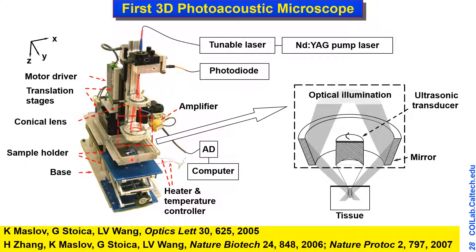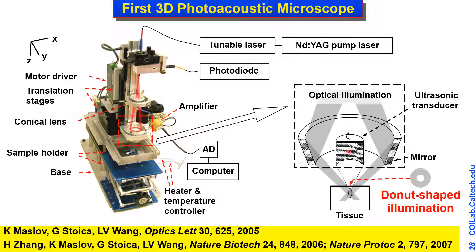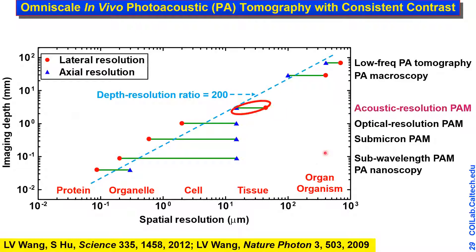The first 3D photoacoustic microscope was built in our lab. The key component uses a donut beam focused into tissue with a dark core on the tissue surface to minimize surface interference. Ultrasound detection is confocal with light illumination to maximize SNR. With a single laser shot we get a 1D image; time of arrival gives depth resolution, and acoustic focusing gives lateral resolution for full 3D resolution. The system head is scanned in a water tray with a membrane window coupling light and sound, giving multiple millimeters penetration at tens of microns resolution.